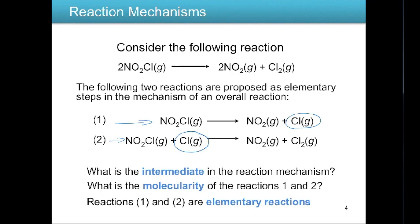The molecularity of step one is unimolecular because only one NO₂Cl molecule is involved. In step two, we have one NO₂Cl and one Cl atom — two molecules on the reactant side — so step two is bimolecular with a molecularity of two. Since both steps are part of a reaction mechanism, they are called elementary reactions.